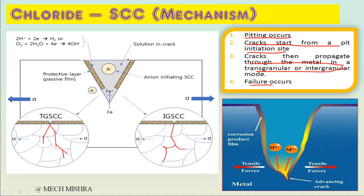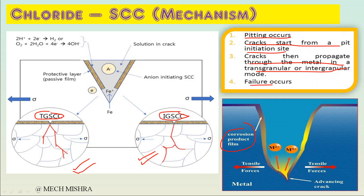From the pit, the crack may propagate as transgranular stress corrosion cracking (TGSCC) or intergranular stress corrosion cracking (IGSCC). Transgranular is more common in stress corrosion cracking, but intergranular can also occur when the material is already susceptible and has not been properly solution annealed. The initial pit forms due to corrosive products, and then the crack initiates into the parent metal due to the effect of tensile forces, which further propagates the CLSCC.